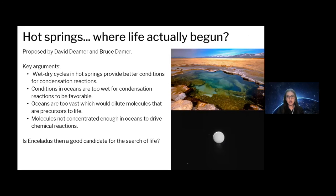But there's a catch. Recently proposed by David Deamer and Bruce Dahmer, the hot spring hypothesis implies that deep-sea oceans with hydrothermal vents may not produce the optimum conditions for life to thrive, and that hot springs on land might be the better option. The key arguments: wet-dry cycles in hot springs provide better conditions for condensation reactions, and the conditions in oceans are too wet for condensation reactions to be favorable. They also argued that the oceans are too vast, which would dilute the molecules that are precursors to life, meaning they are not concentrated enough to drive these chemical reactions.